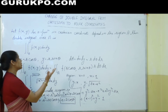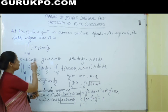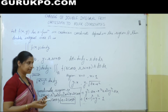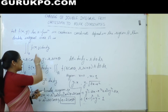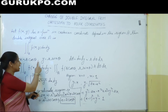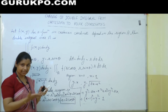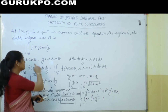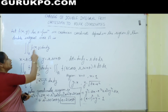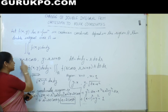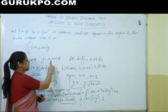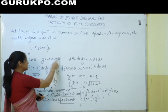First of all, we convert this function into polar coordinates. What do you mean by polar coordinates? In polar coordinates, the function is given in terms of r and theta, where r denotes the radius vector and theta is the angle of that radius vector with the initial line.